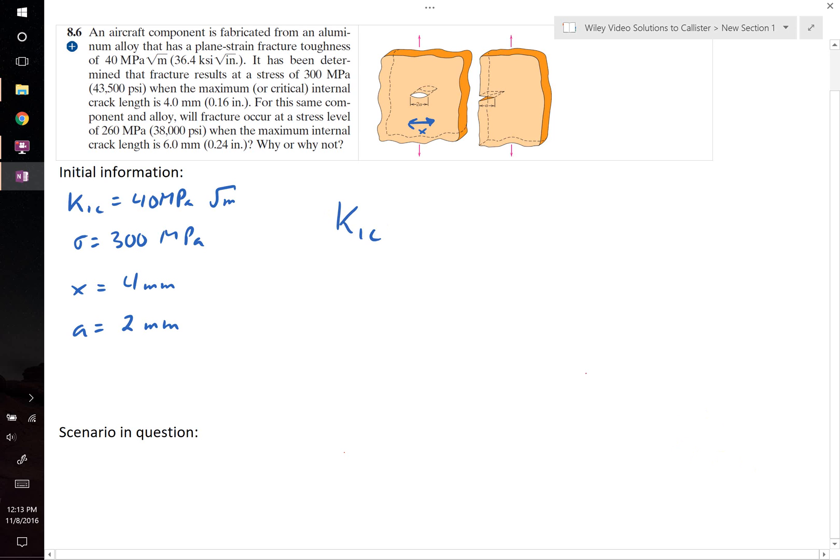We can write our fracture toughness equation as follows. K1c equals y times sigma times the square root of pi times the critical crack length.